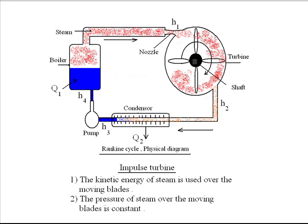This high-pressure steam then enters the turbine and falls over the blades, pushing them so the shaft rotates. After doing work, the steam exits and is fed to the condenser, where it loses heat and becomes liquid water again. This liquid water is fed back to the boiler by a pump, completing the Rankine cycle.